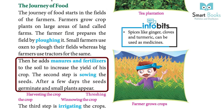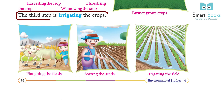The farmer adds manures and fertilizers to the soil to increase the yield of the crop. The second step is sowing the seeds. After a few days the seeds germinate and small plants appear.